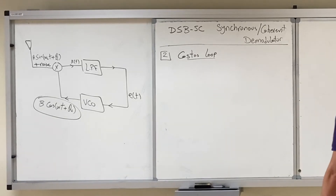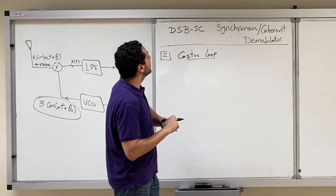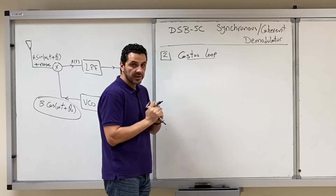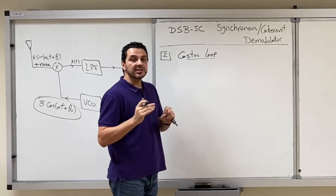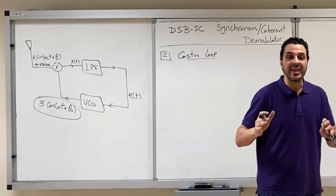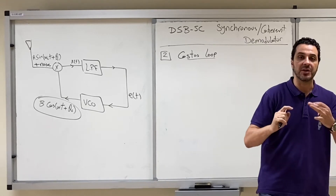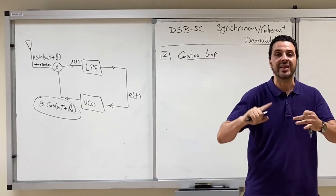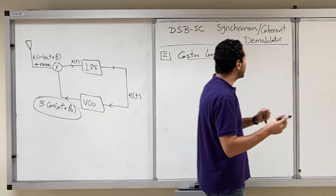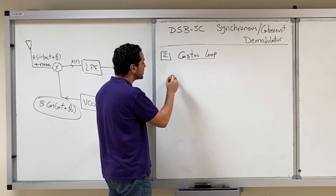The second method for synchronous demodulation of double-sideband suppressed-carrier signals is called the Costas Loop. The Costas Loop has an advantage over the squaring method in that it merges everything in the same circuit — the phase-locked loop, the squaring, and even the demodulation — all in the same circuit.